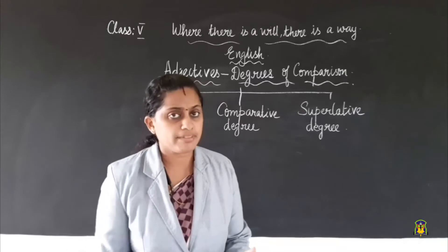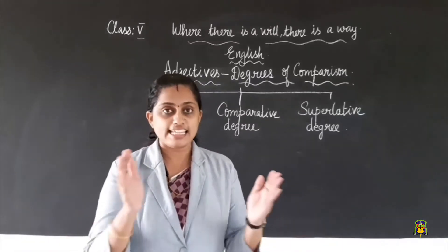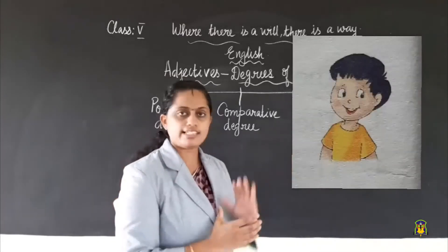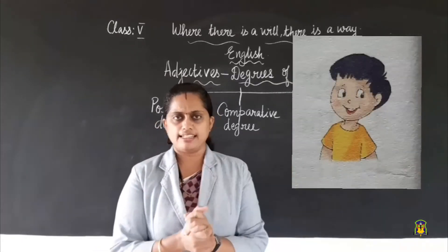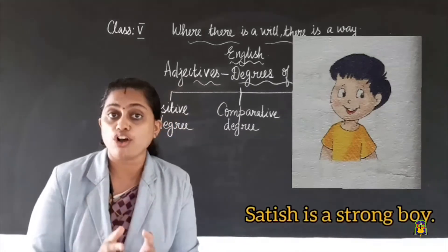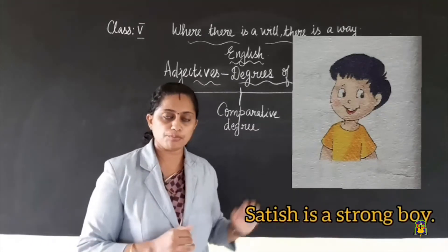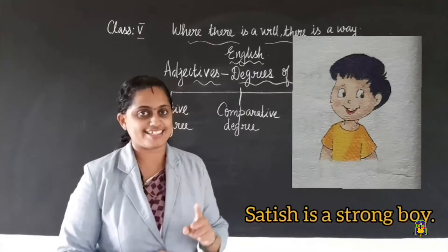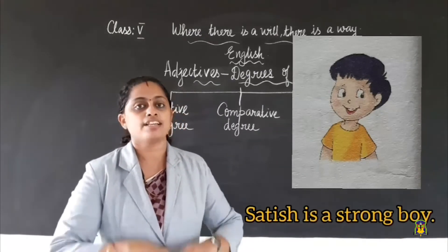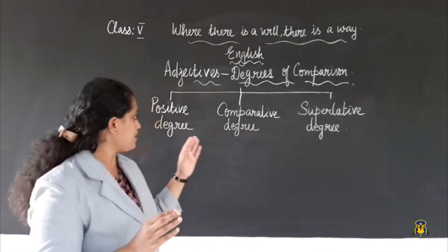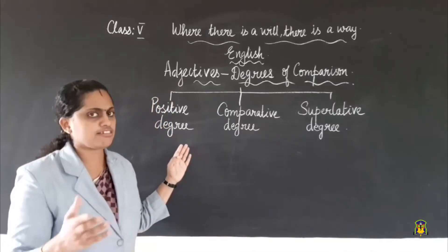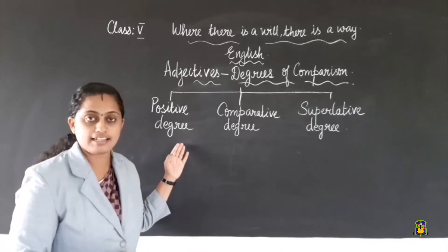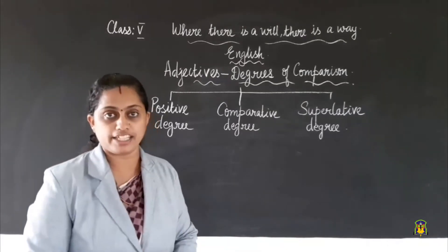When we do not make any comparison, we will be using the positive degree. For example, this is Satish — Satish is a strong boy. The adjective here is 'strong.' We are not making any comparison, so it will be the positive degree.